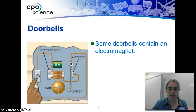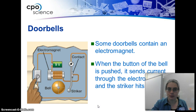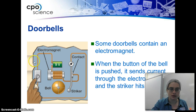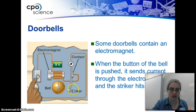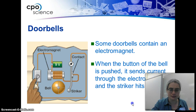Some doorbells contain an electromagnet. When the button of the bell is pushed, it sends a current through the electromagnet and strikes the bell. You've got the battery, the electromagnet, and the striker. What happens is the electromagnet actually attracts the striker, the striker comes close to the bell, and rings it.